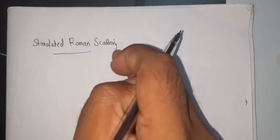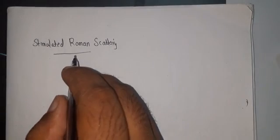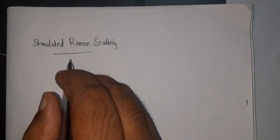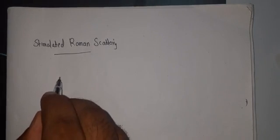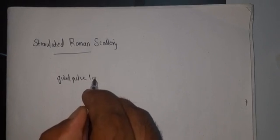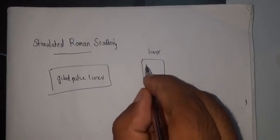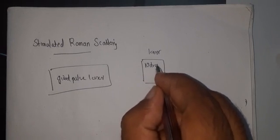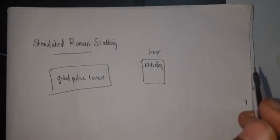The discovery of stimulated Raman scattering was accidental. It occurred while researchers were experimenting with a nitrobenzene-filled Kerr cell as a shutter for a Q-switched giant pulse ruby laser.